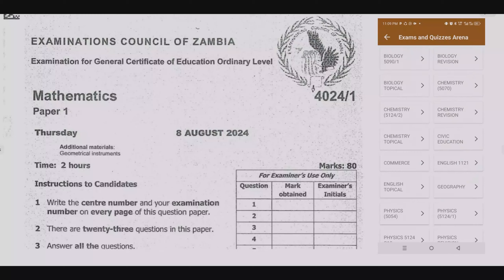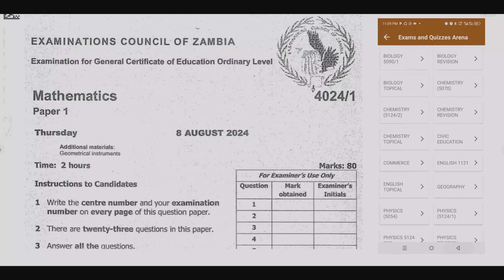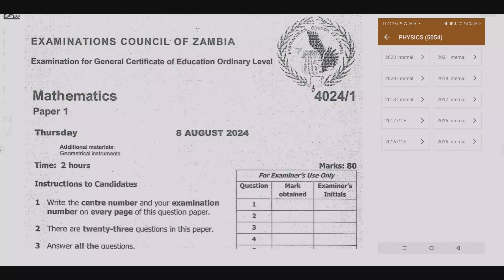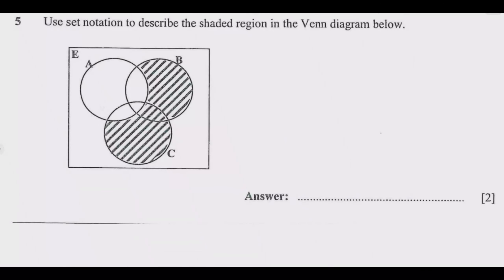In this app, you're going to find a lot of helpful materials including quizzes based on topical exam past papers. You're going to find over 10,000 questions with solutions, instant answers, and detailed explanations. Question five: use set notation to describe the shaded region in the Venn diagram below.